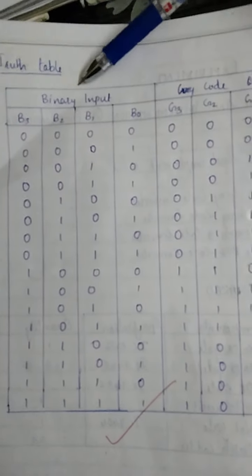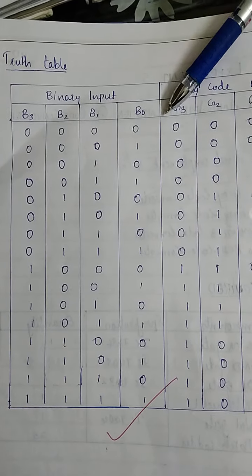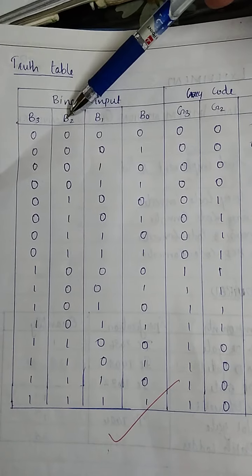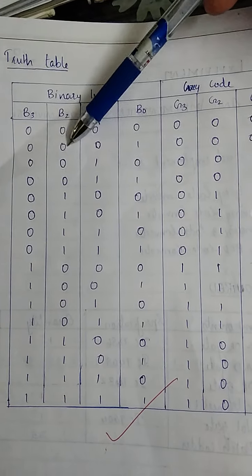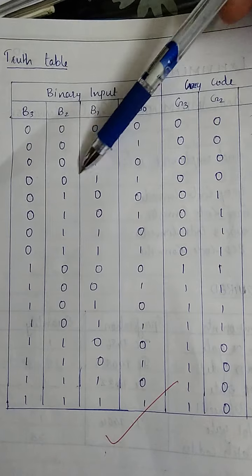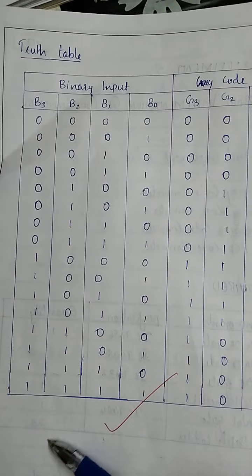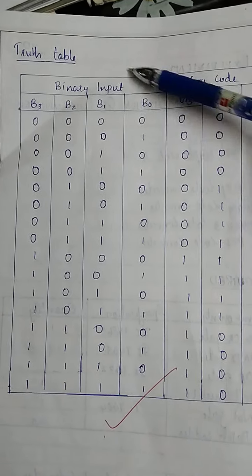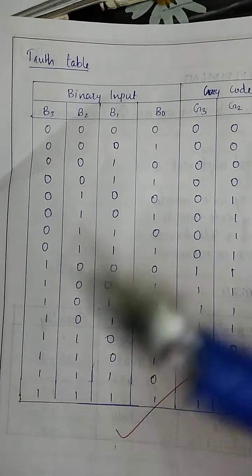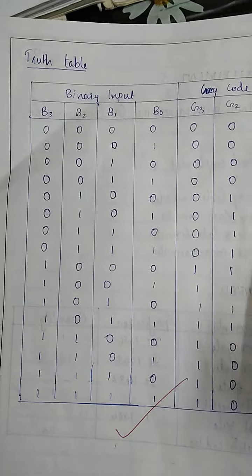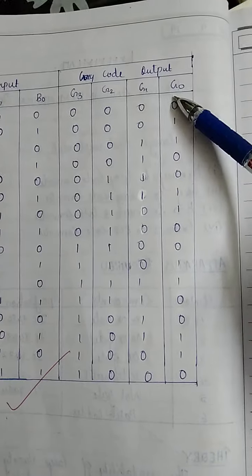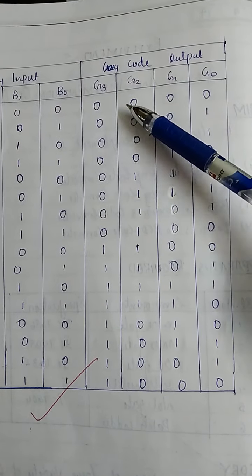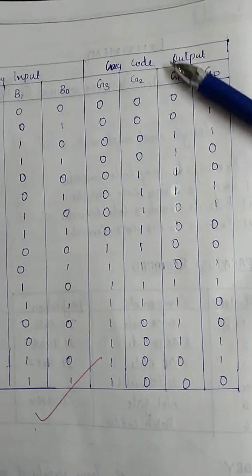What is the Truth Table? First, the Binary input. We are looking at 4 bits: B0, B1, B2, B3. The values go from 0,0,0,0 up to 1,1,1,1. For Binary to Gray conversion, Gray is the output. The output is 4 bits: G0, G1, G2, G3. That is the code output.